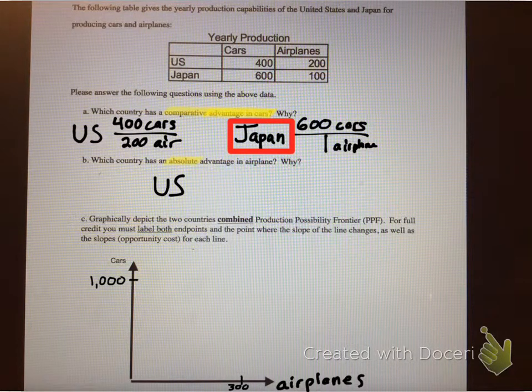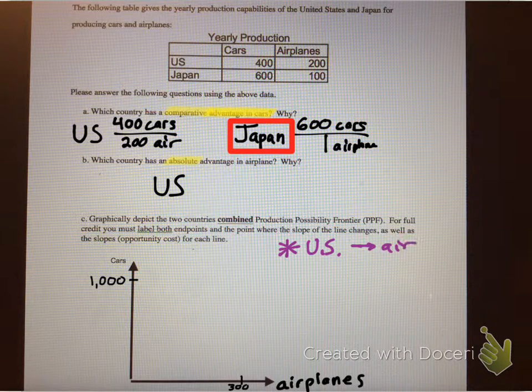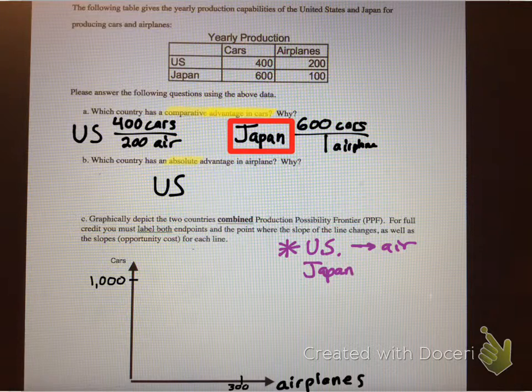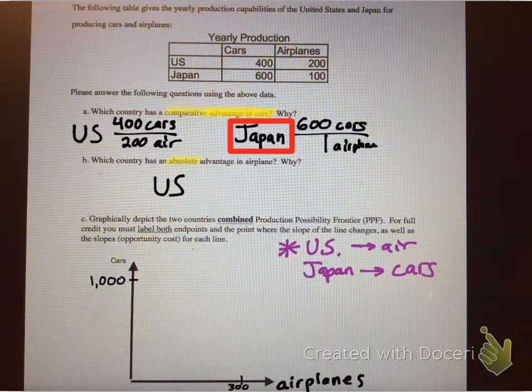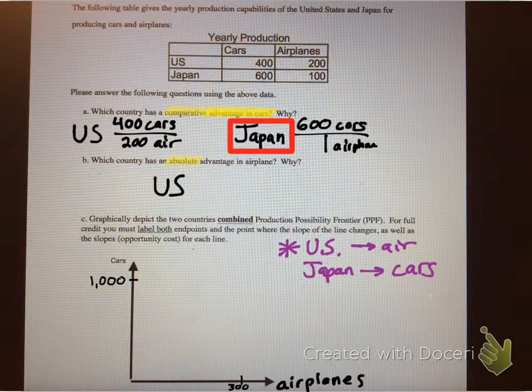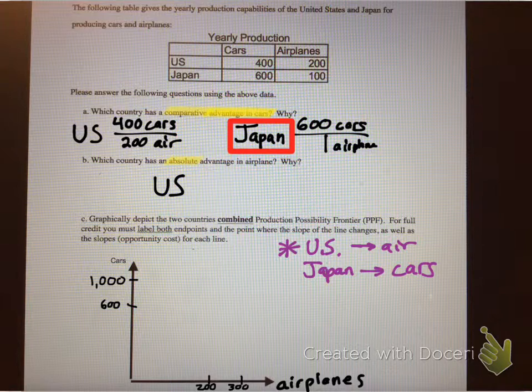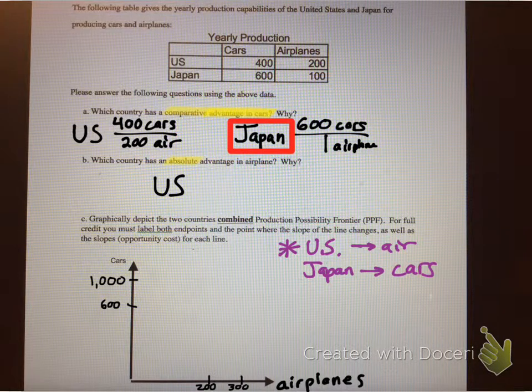Now the next question we want to ask is, who can produce the airplanes the best, and who can produce the cars best? Well, A and B kind of answered that question. So, the U.S. can produce airplanes best, and Japan produces cars the best. And what's the maximum amount that they can produce of each? Well, the U.S. can produce 600, oh wait, cars, sorry. The U.S. can produce 200 airplanes as their maximum, and that means Japan's maximum can produce is 600 cars. So that's the maximum of each.